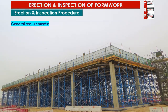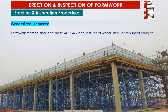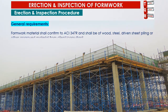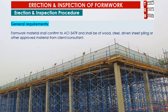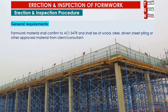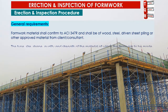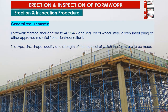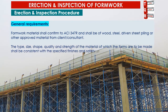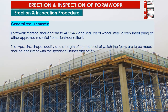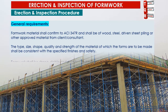Formwork material shall conform to ACI 347R and shall be of wood, steel, driven sheet piling, or other materials approved by the client or consultant. The type, size, shape, quality, and strength of the material of which the forms are made shall be consistent with the specified finishes and safety.